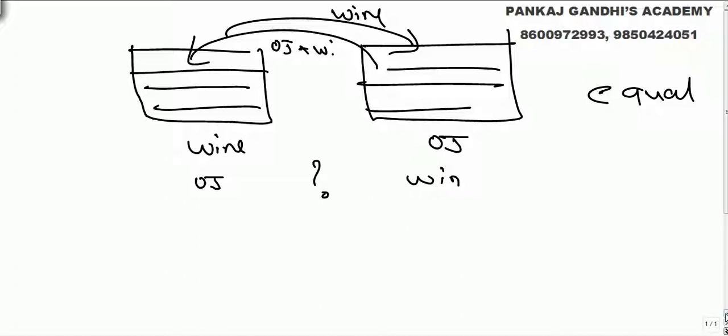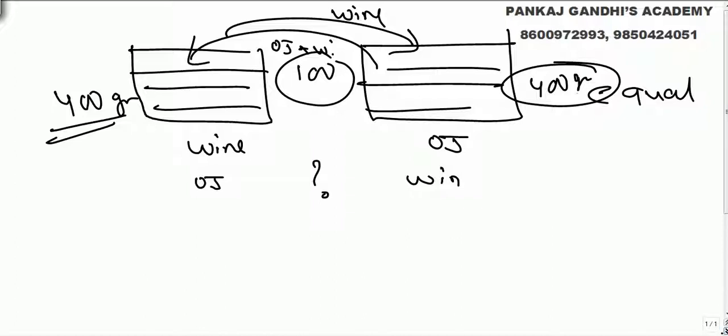Now let us assume any value. Let's say this had 400 grams and this was also 400. It was equal and we took out 100 and we did it. Let us try to solve it and we will get the answer on our own.